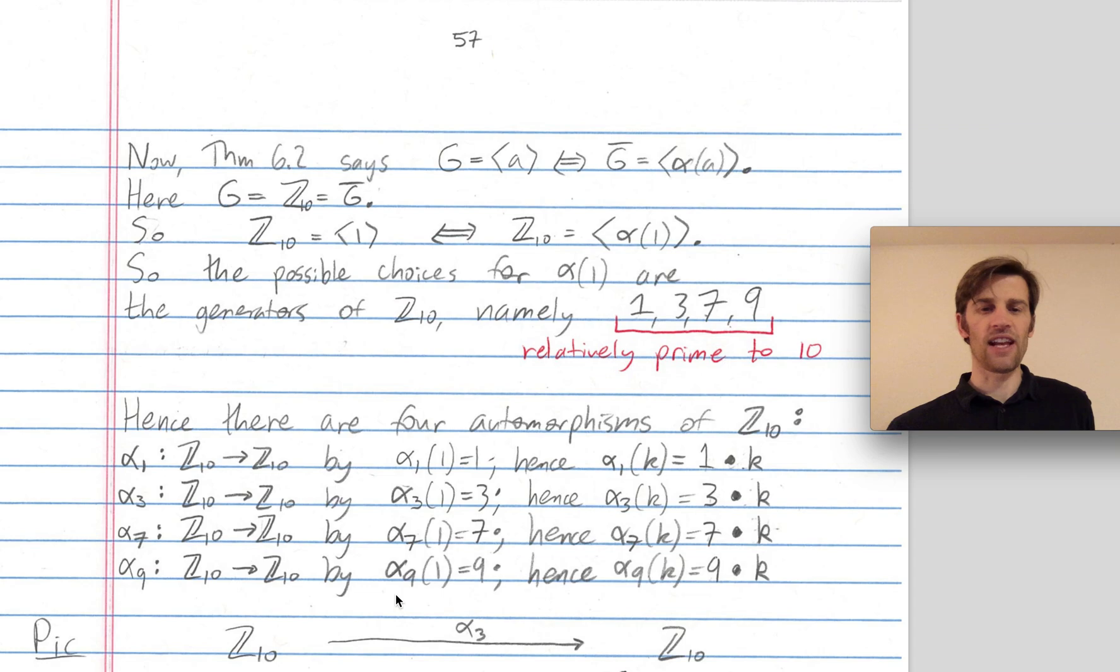We saw last time that once you know where a generator 1 gets mapped, that determines where any arbitrary element k gets mapped. So alpha 1 maps an arbitrary element k of Z mod 10 to 1 times k. For example, alpha 7 maps an arbitrary element k in Z mod 10 to 7 times k.